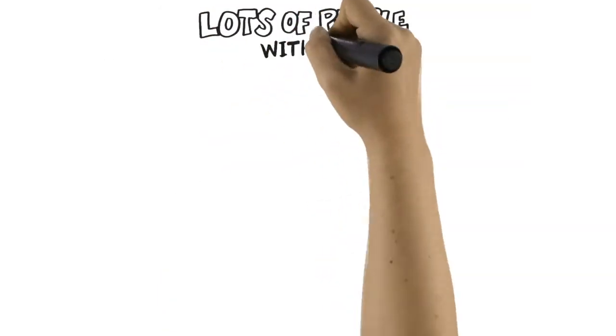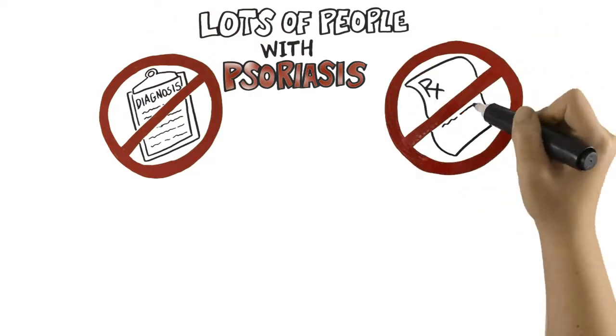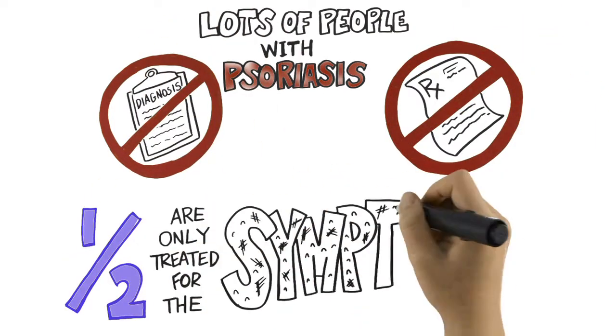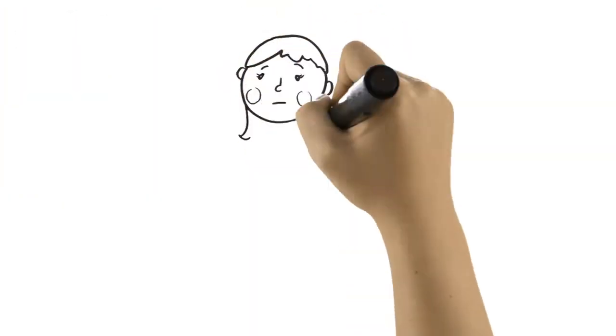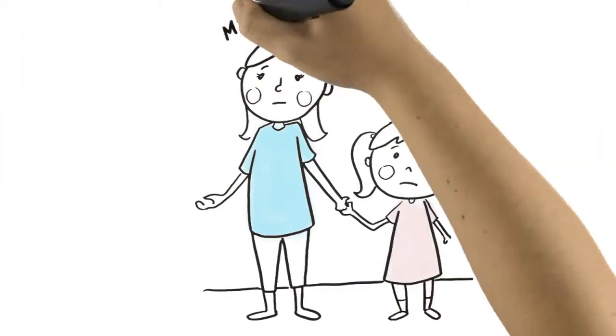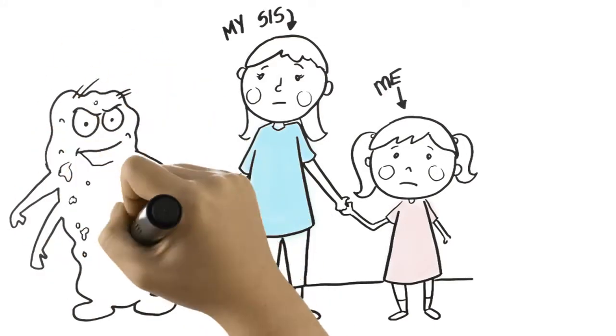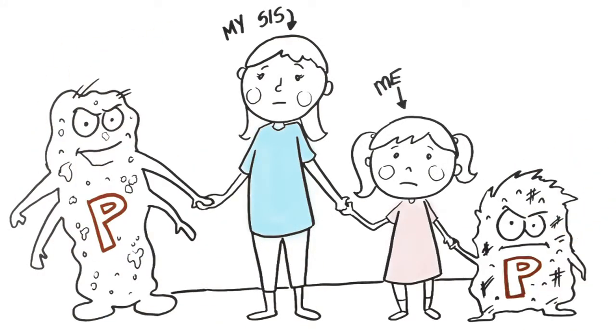Lots of people with psoriasis don't ever get properly diagnosed or treated. Half are only treated for the symptoms, not the actual disease. And while psoriasis and other illnesses are often inherited, two people in the same family can have different forms and degrees of the disease.